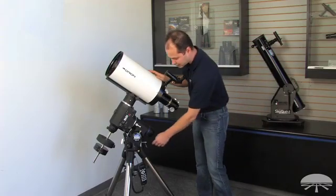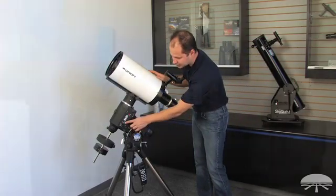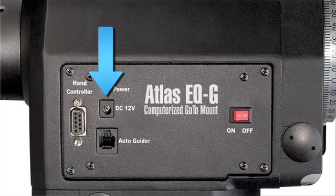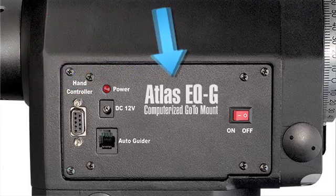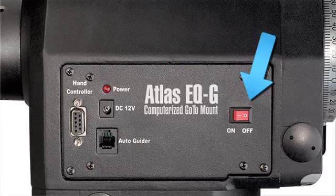So in terms of hookups, the battery is plugged into the DC12 port. The hand controller is plugged into, obviously, the hand controller port. You've got your on-off switch here and that's about it for setup.